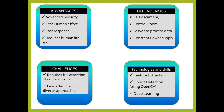The dependencies include a CCTV camera in working condition and a constant power supply, since cameras would go offline during a power failure and the system would stop working. A person is also required to confirm the robbery case. Additionally, a server is needed to process the data; we only pass the data through the system without storing the entire video.